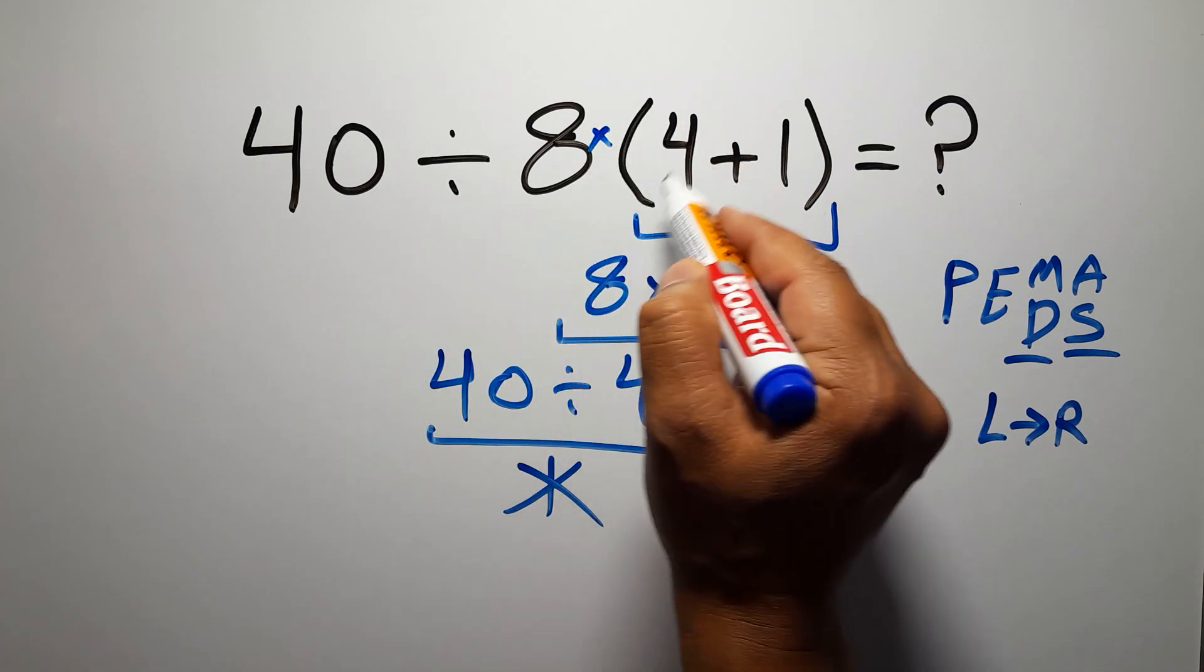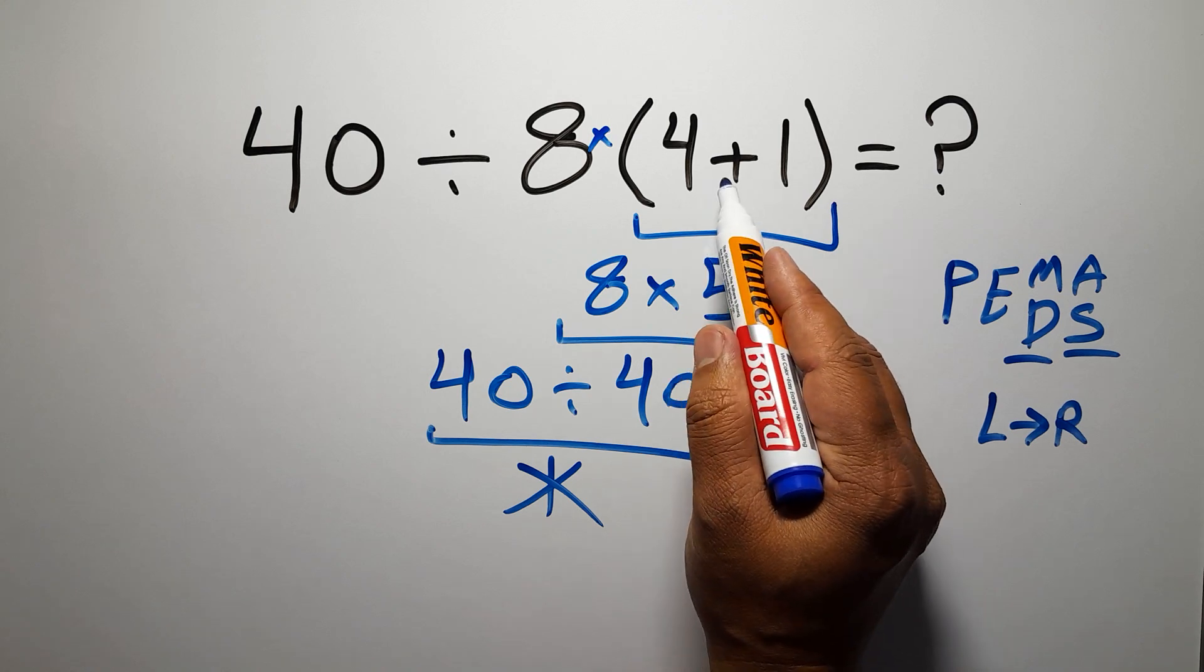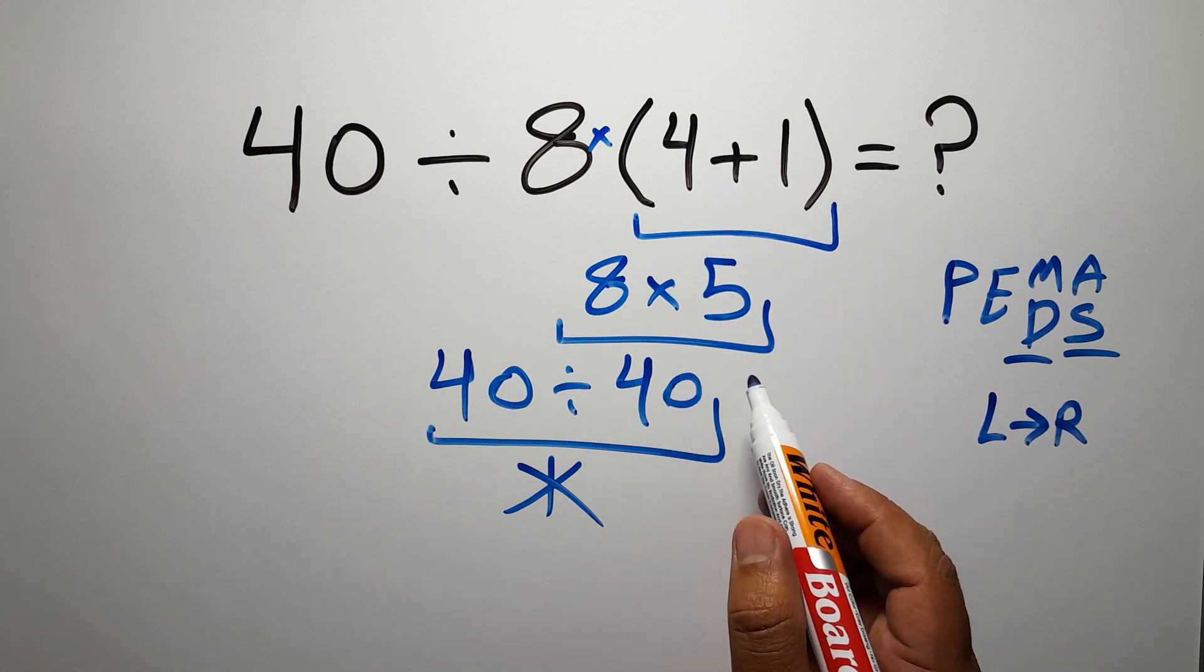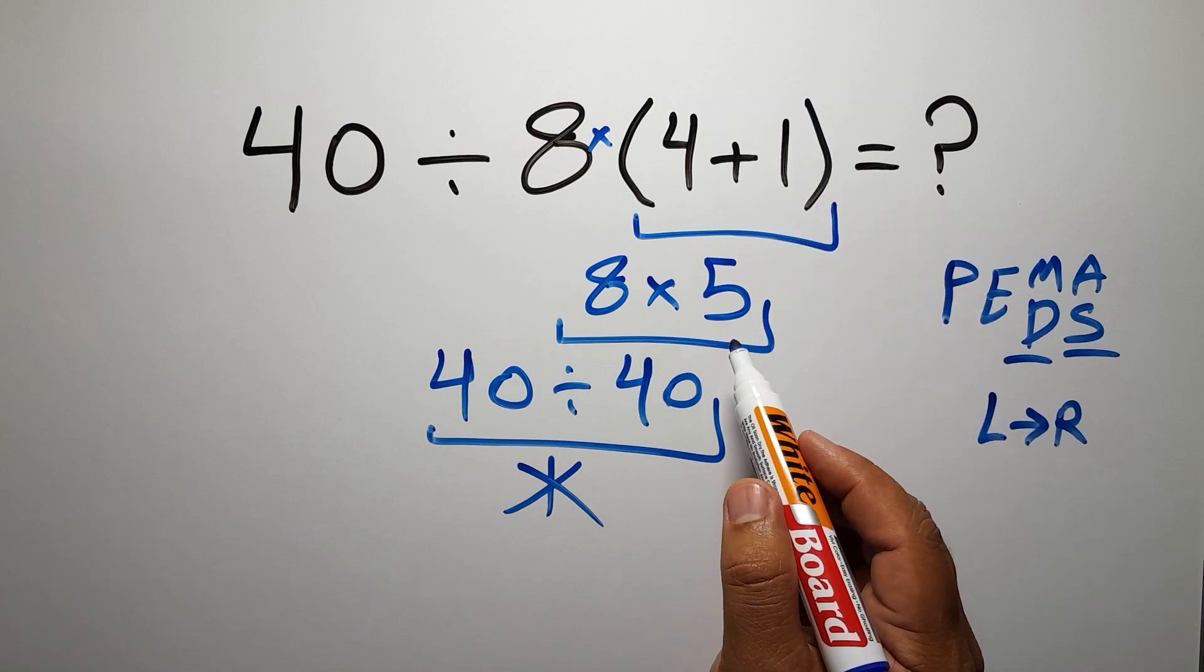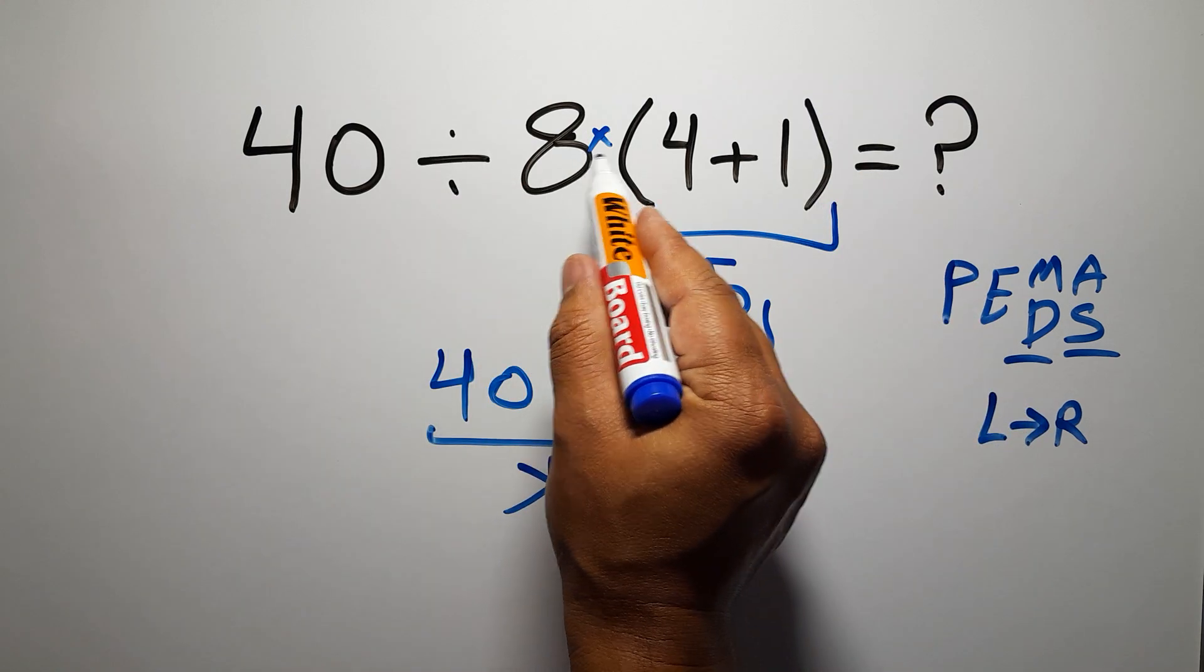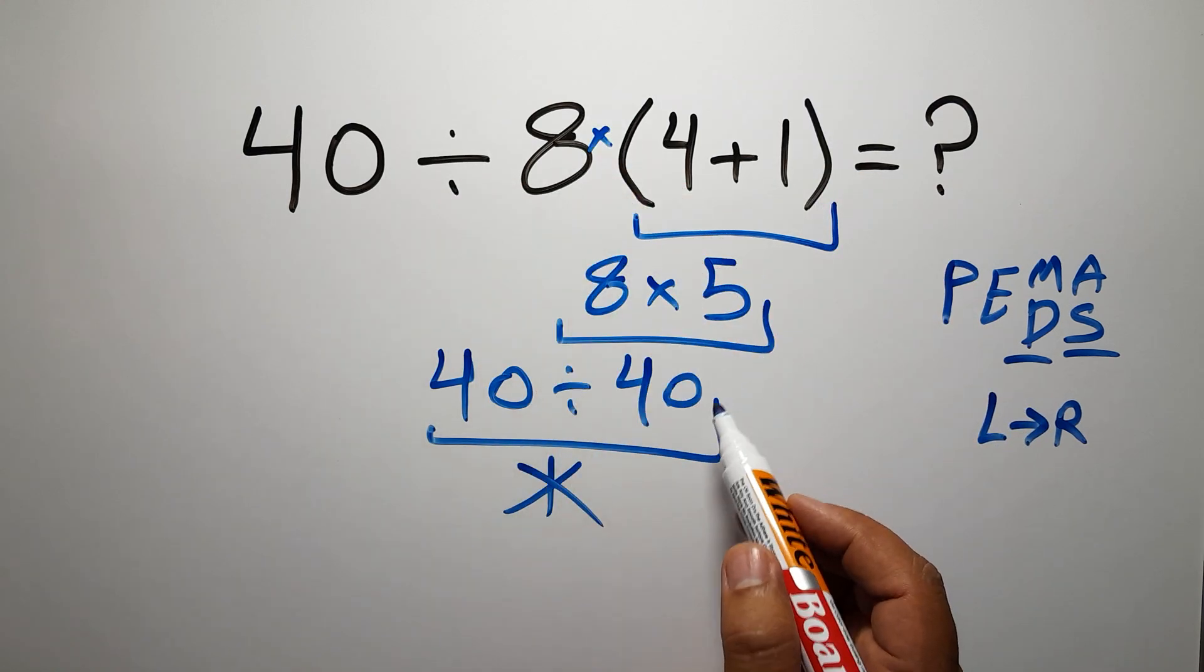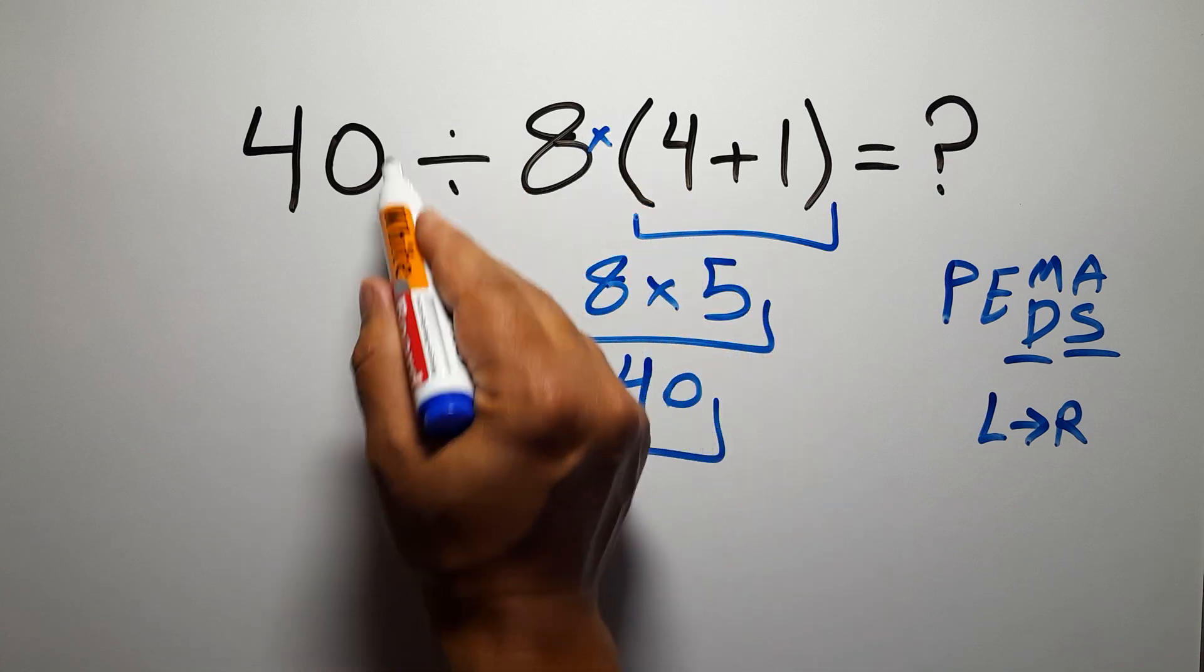In this expression we have one division, one multiplication, and one parentheses. Inside these parentheses we have one addition. So first we have to do this parentheses, then this division, and finally this multiplication. If you do this multiplication before this division, it is wrong.